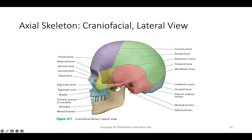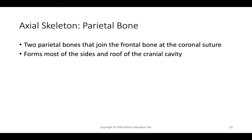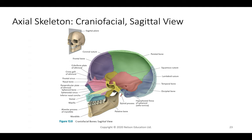The lacrimal bone is inside the eye as part of the lacrimal tear apparatus. The parietal bones join at the coronal suture with the frontal bone and form the side and top of the cranial cavity. In a sagittal view we can see the frontal and parietal bones connected by the coronal suture, the two parietals connected by the sagittal suture, the squamous suture connecting parietal to temporal, and the lambdoid connecting occipital to parietal.